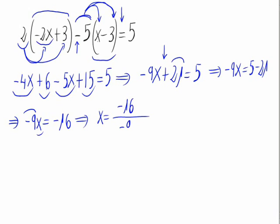So negative negative positive, this gives us 16 over 9 which is an irreducible fraction. It cannot be simplified. So x equals 16 over 9. And this is the answer to the given equation.